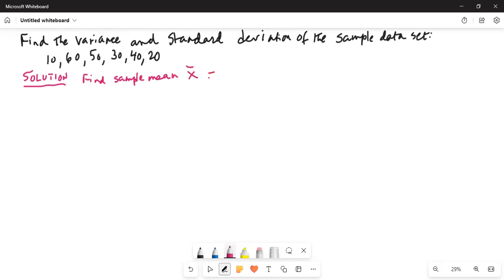Which is sum of all the numbers divided by sample size. So in this case, it is 10 plus 60 plus 50 plus 30 plus 40 plus 20, to be divided by sample size 1, 2, 3, 4, 5, 6.